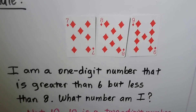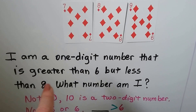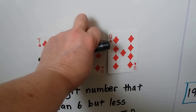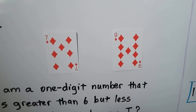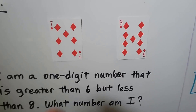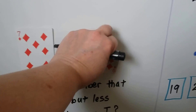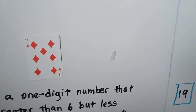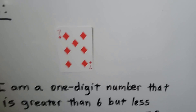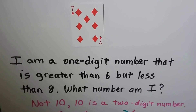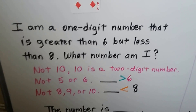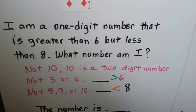We already took the 10 away. It's less than 8, so it can't be 8 — it has to be smaller than 8 — so we take away the 8. And if it's less than 8, it can't be 9, because 9 is bigger than 8. The only card we have left is the 7, so the answer to our riddle is 7.